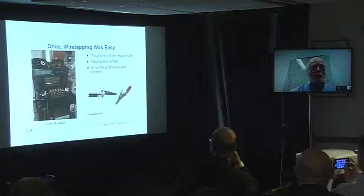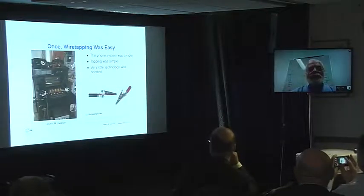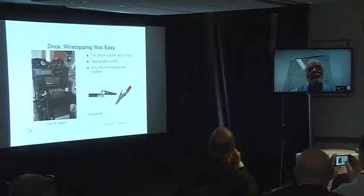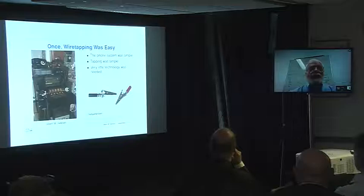I'm going to have to go rather quickly because I've got too many slides. When U.S. wiretap law was codified, wiretapping was very easy. Most phone lines were just simple twisted pair. All you had to do to tap them was attach a pair of alligator clips to the proper pair of wires and just listen in.